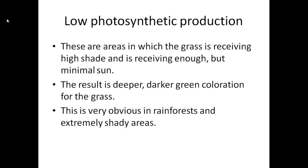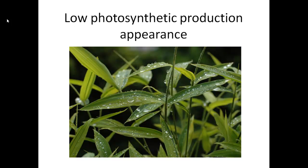On the opposite end of this spectrum is low photosynthetic production. These are areas where grass receives high shade and just enough but minimal sun, resulting in a deeper, darker green color. This is obvious in rainforests and very shady areas where grass grows. This color is very different than the first grass that was under high photosynthetic production — it is deeper and darker. A person who is painting would probably want to know these color differences because they would need to know what color and pigment of green to use.